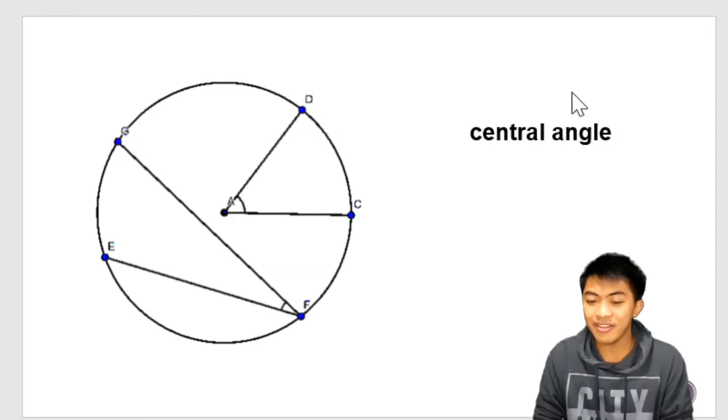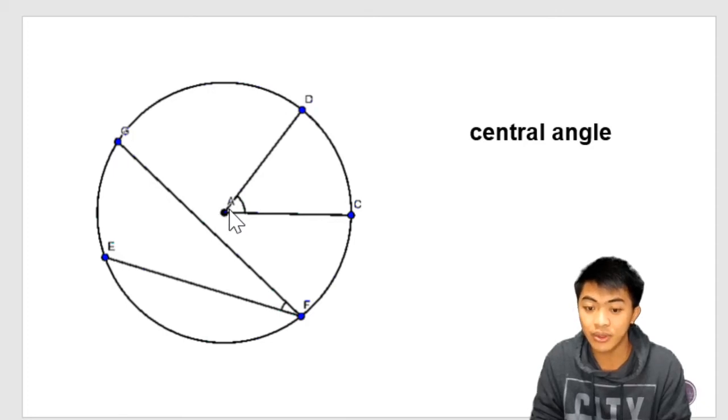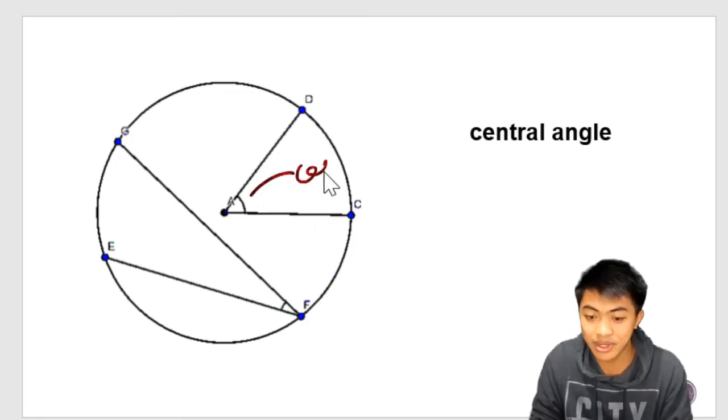Now we have here the central angle. And a central angle is an angle whose vertex is the center of the circle and whose sides are radii. Radii is the plural of radius. This one here is the central angle. That is angle A.